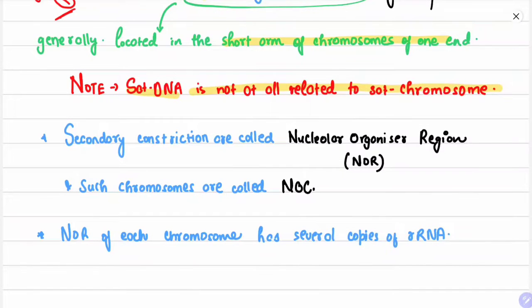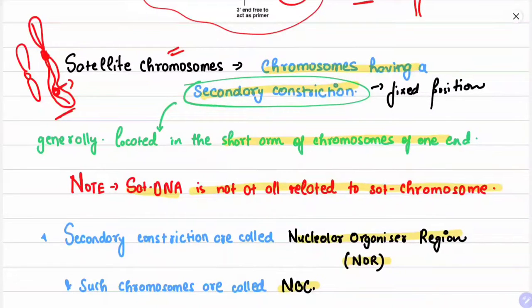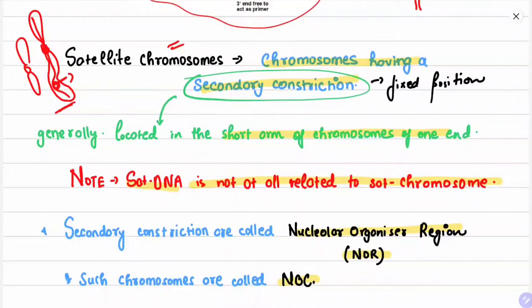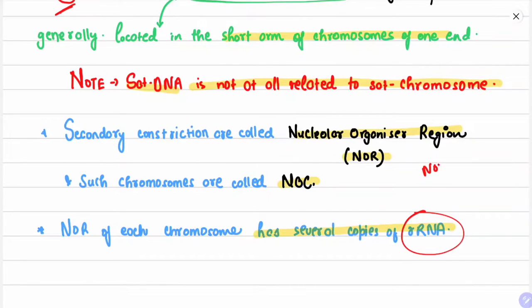Secondary constrictions are also called the Nuclear Organizer Region (NOR), and such chromosomes are also called nuclear organizer chromosomes. So satellite chromosomes have two names: satellite chromosomes and nuclear organizer chromosomes. The NOR of each chromosome has several copies of rRNA — ribosomal RNA — meaning the nuclear organizer region helps in the formation of ribosomes.